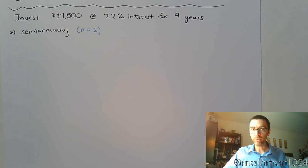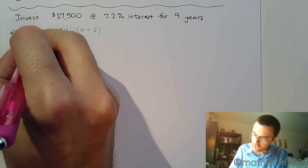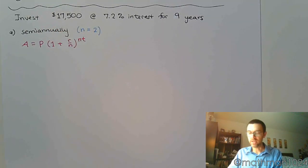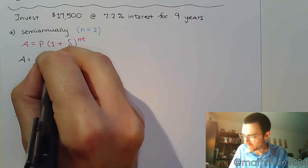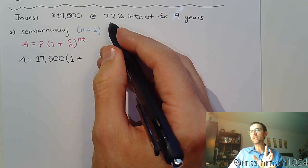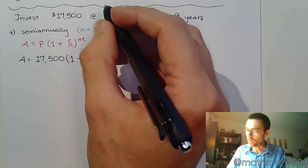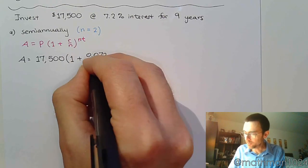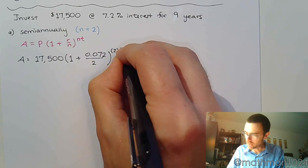So let's make sure we write the correct formula. Since this is happening at discrete moments, two times a year, we're going to use that compound interest formula: A equals P times 1 plus r over n to the nt. The amount I'm going to have at the end is my initial value of $17,500 times 1 plus my rate 7.2%. Make sure you convert that percent to decimal correctly. That's going to be 0.072, semi-annually so n equals 2, raised to the 2 times 9.